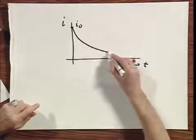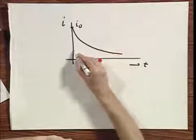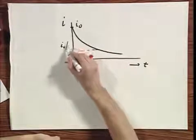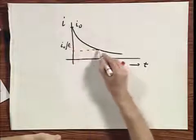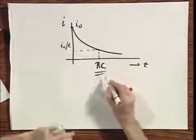And it discharges in exponential fashion. And by the time it is down to I zero over E, which is somewhere here, the time T equals RC. That's why it's often called the RC time of the circuit.